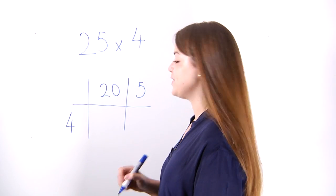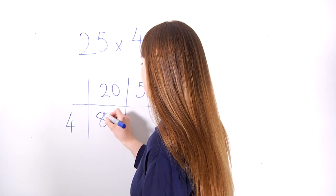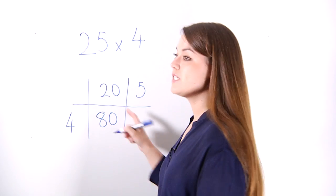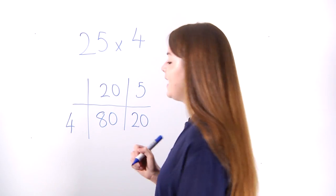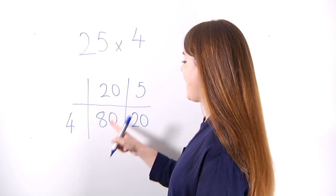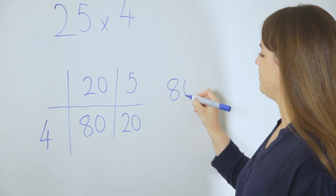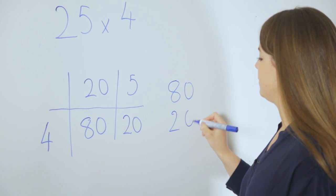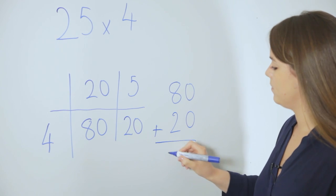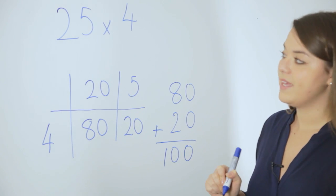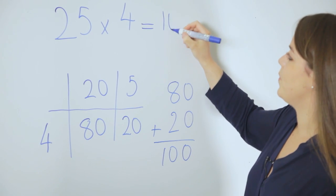Children no longer need the array so they're using numbers. 4 times 20 is 80 and 4 times 5 is 20. Again, similar to earlier, we're going to add these numbers together at the side. The answer to 25 times 4 equals 100.